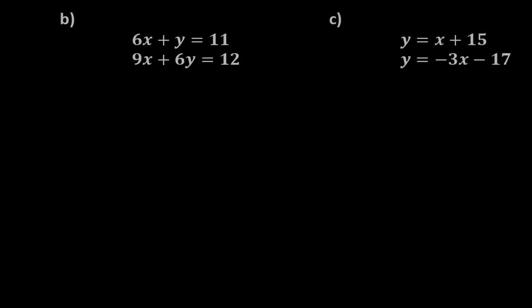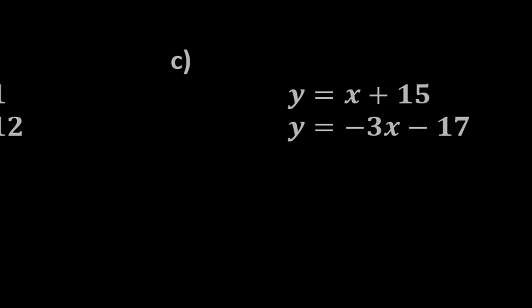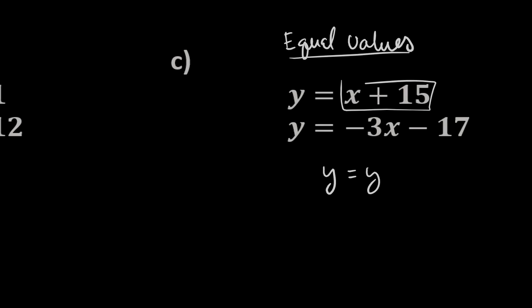And as I glance at these, I guess C, I probably would say I would use equal values method. And I would pick that for this one because it has them both in y equals, right, by itself. So I could just start with this idea that, hey, since y is equal to itself, I can take this y and set it equal to this y. That's the idea there.